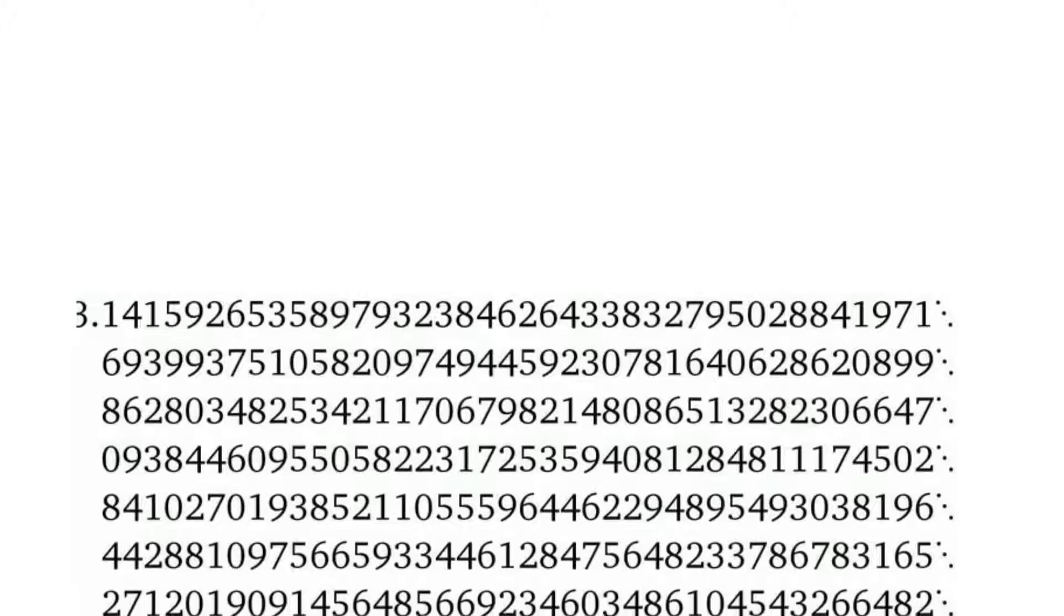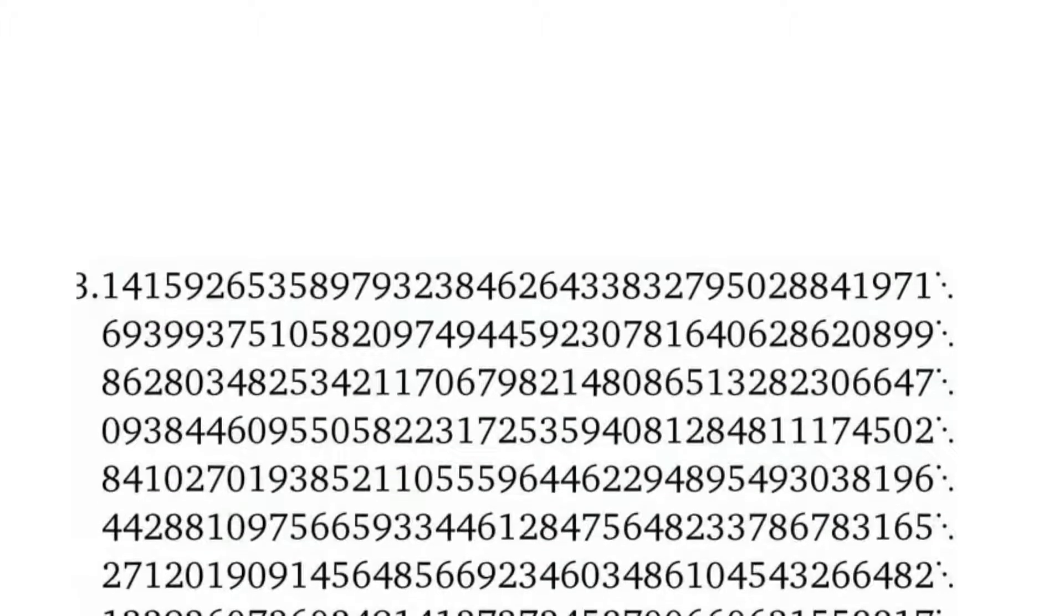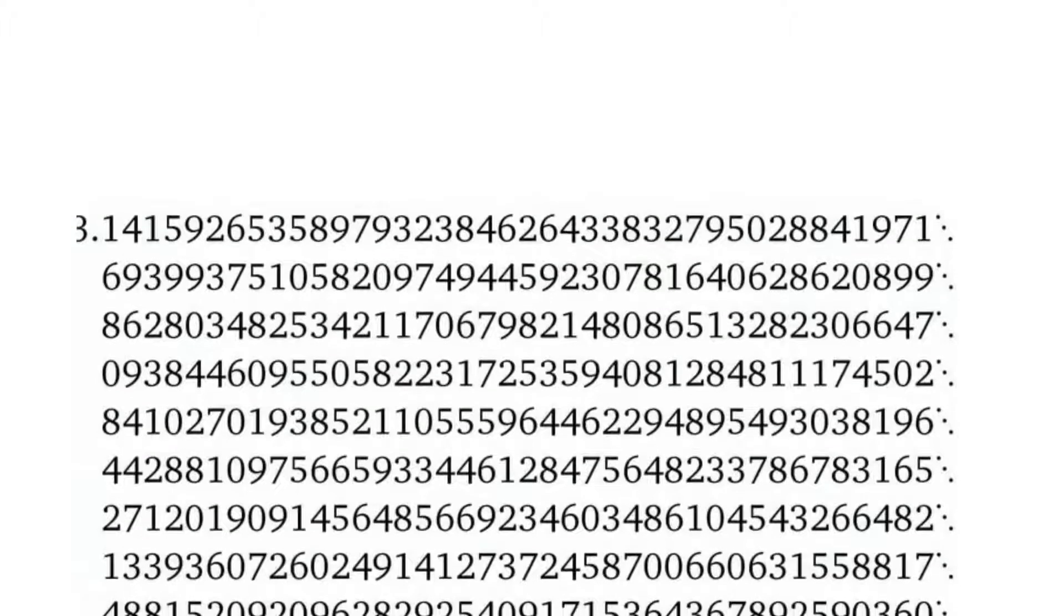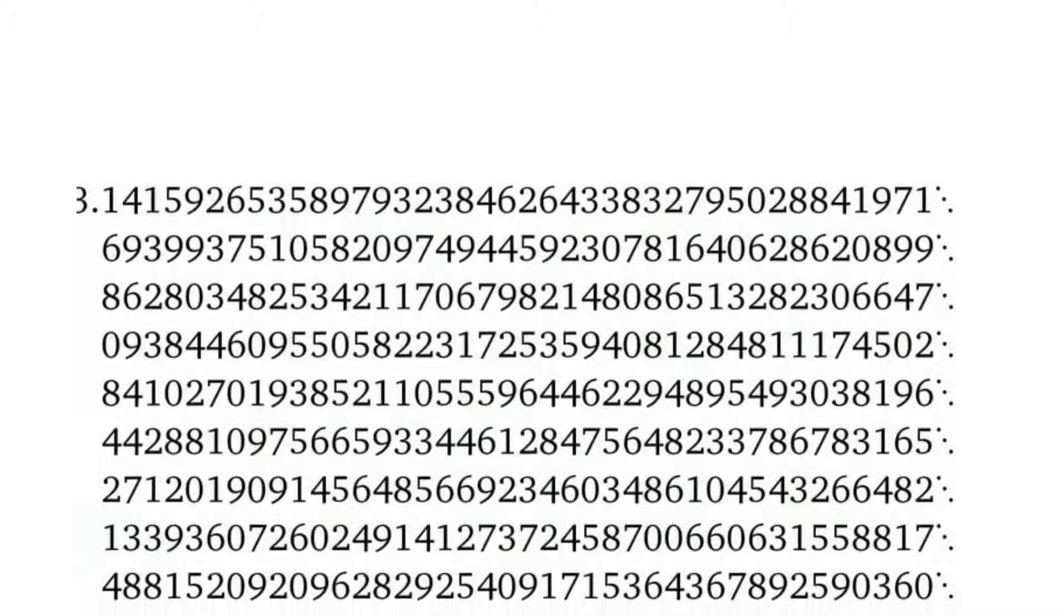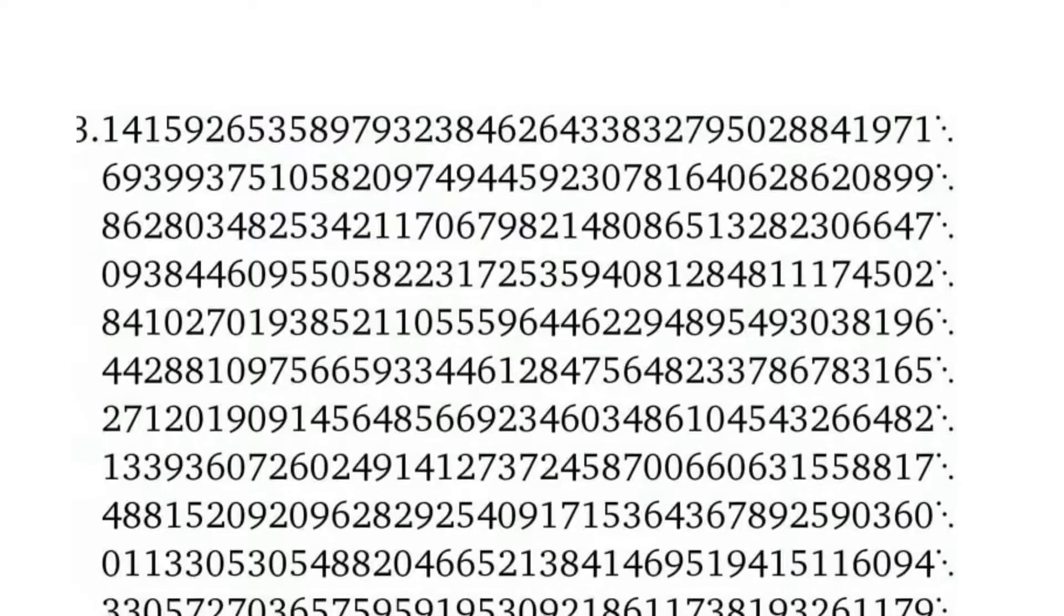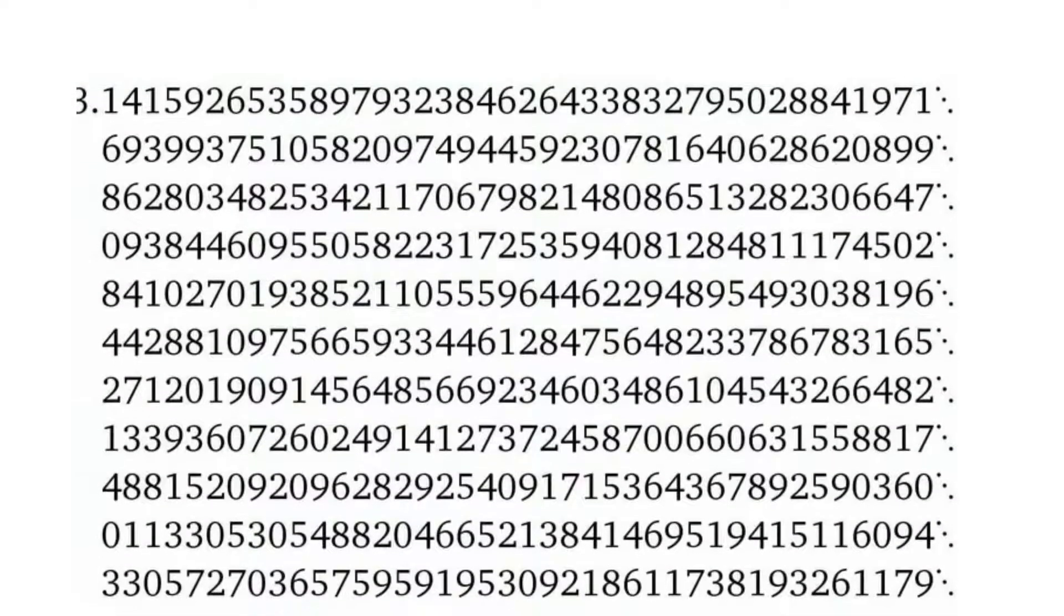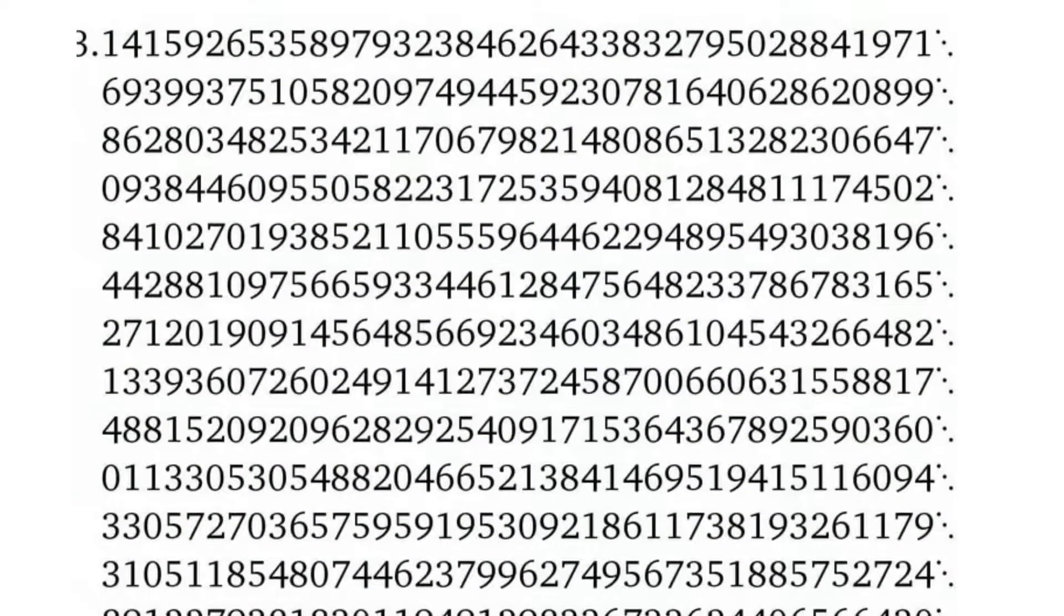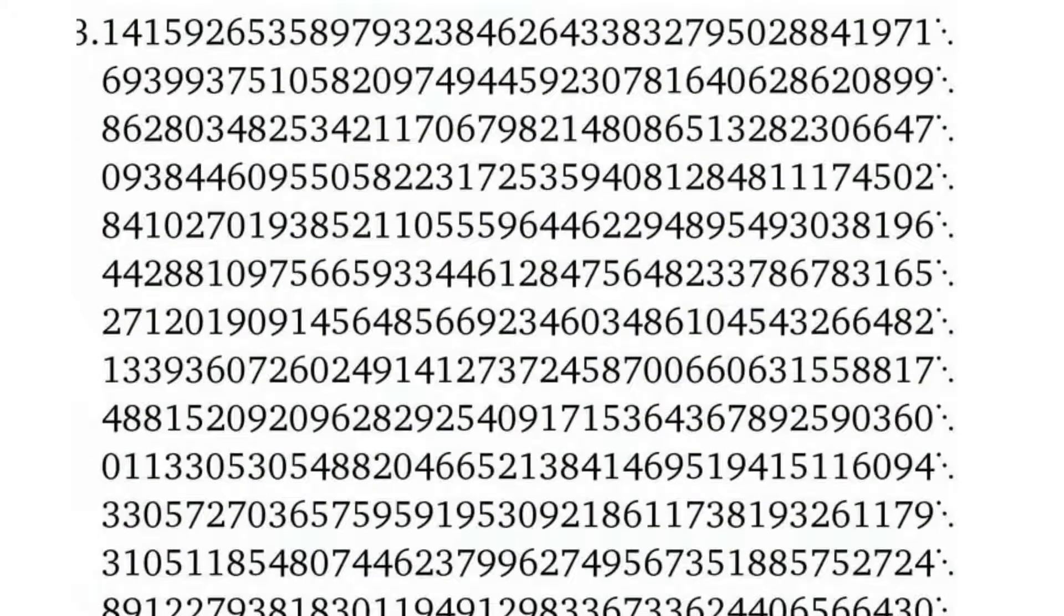On average, to find a sequence that is n digits long, you need to look through 10 to the power of n digits to find the next occurrence. A five-digit zip code should appear about once in every 10 to the power of 5 or every 100,000 digits of pi. Every finite sequence recurs an infinite number of times precisely because pi goes on forever.